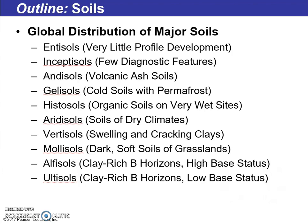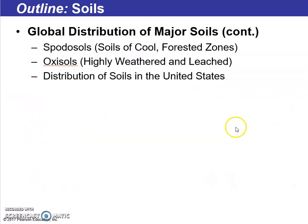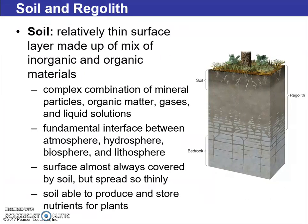At the end of the chapter there are nice maps showing global distribution of major soils, especially in the United States. We'll cover entisols with very little profile development, andisols which are volcanic ash soils — I live in Castlerock and we have quite a bit of that — gelisols which are cold permafrost soils, histosols from very wet organic sites, aridisols for dry climates, vertisols with cracking and swelling clays, mollisols which are dark soft soils of grasslands, alfisols, ultisols, oxisols, and spodosols.